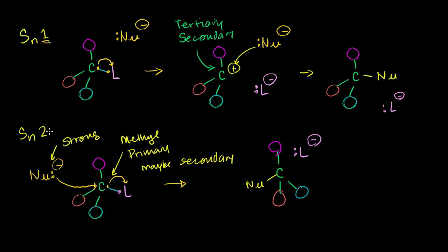Now let's think about the solvent — what these reagents are actually dissolved in. In either an SN1 or SN2 reaction, we're dealing with things that have charge. In general, ions and charged species are more soluble in polar solvents, because the charge likes to be around other things with charge. So in both situations, you want a polar solvent.